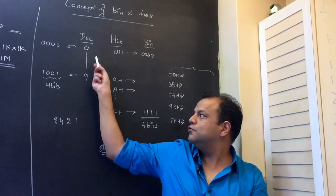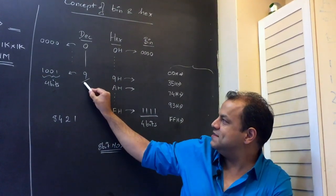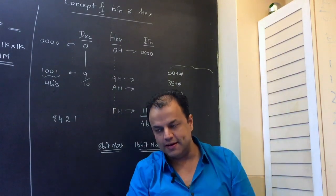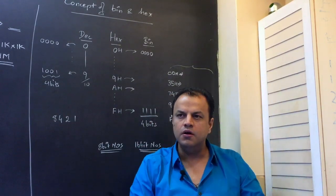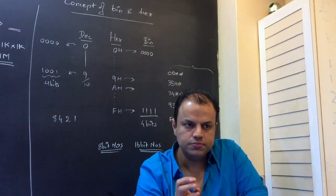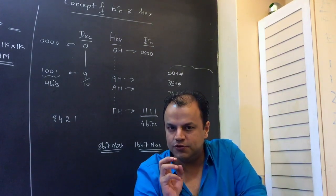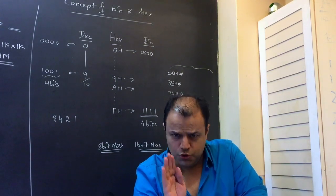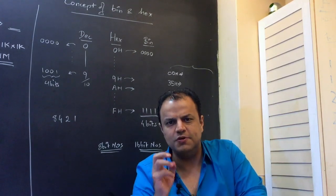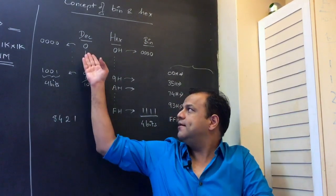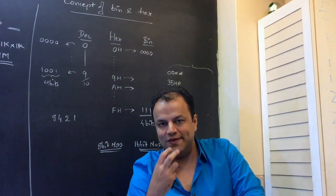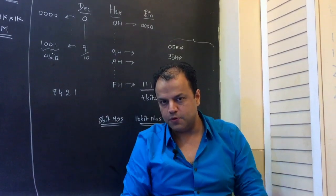In decimal, a single digit goes from 0 to 9, which means it gives you 10 different values. Inside the computer, you know everything is just zeros and ones. Everything stored inside a computer is in binary form. So when I try to convert decimal numbers into binary, I face a problem.